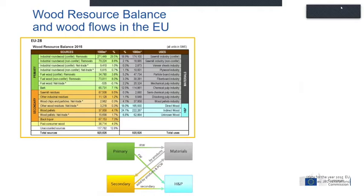What the JRC has been doing for a few years is what we call a wood resource balance and wood flows for the EU, done at country level. For this study, all data is from 2015 because forest statistics are not very timely — it was a bit embarrassing to report this, but that's what we had.